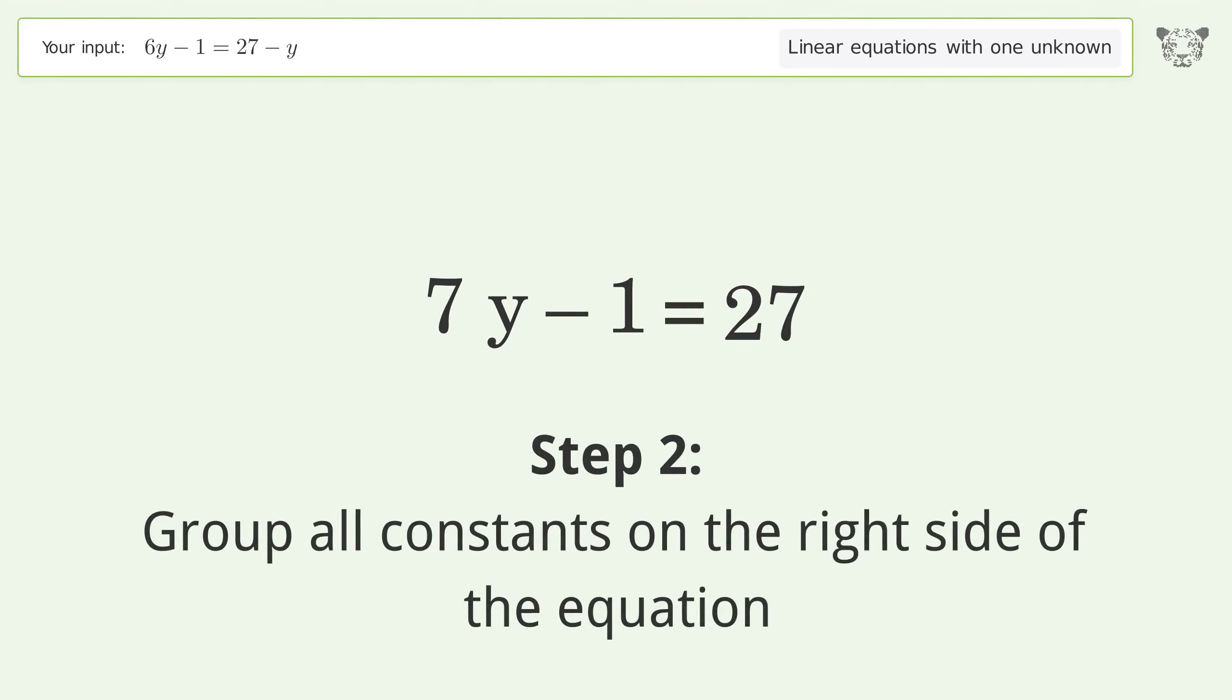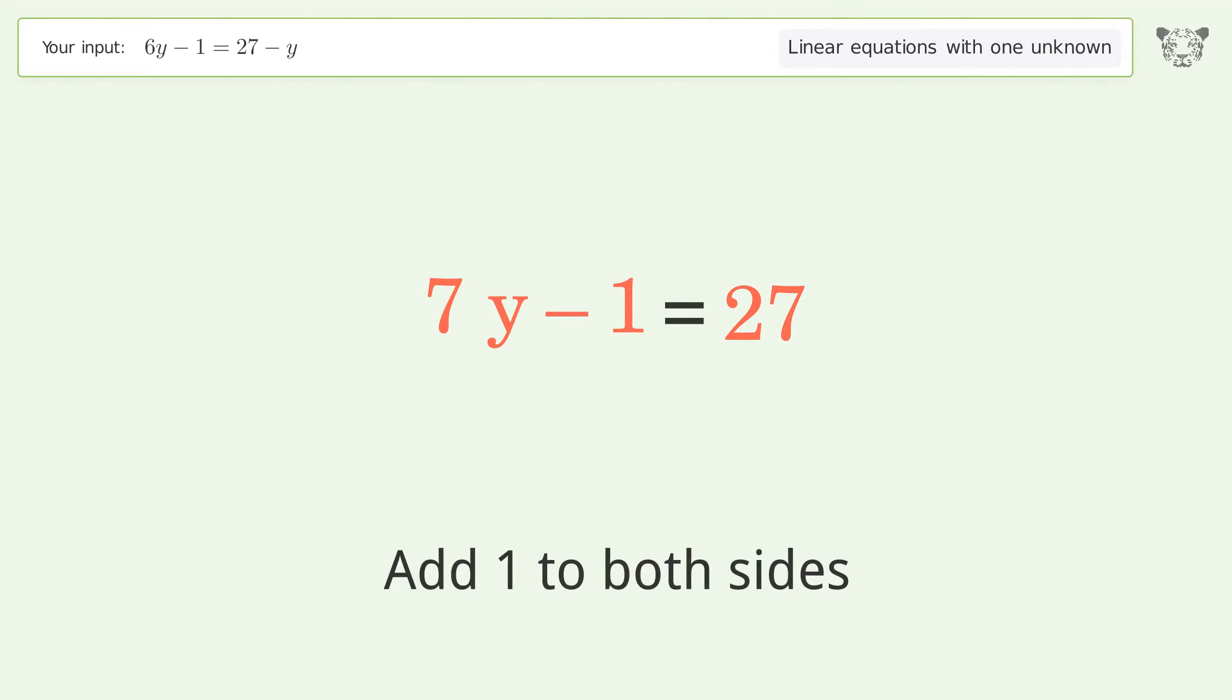Group all constants on the right side of the equation. Add 1 to both sides. Simplify the arithmetic.